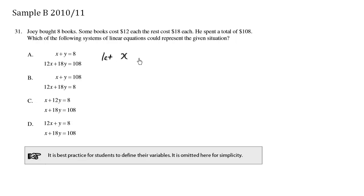let X be the number of books that cost $12. Let Y be the number of books that cost $18. So Y represents the number of books that cost $18.